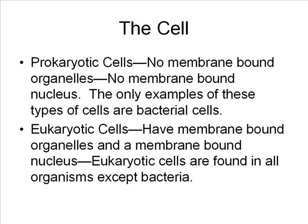Eukaryotic cells are more complicated. These cells have a membrane-enclosed nucleus and many membrane-bound organelles. Eukaryotic cells are found in all organisms except bacteria — this includes animals, plants, fungi, and protists. The importance of membrane-bound organelles is that this allows certain parts of the cell to become specialized and therefore to divide the labor and become more efficient.